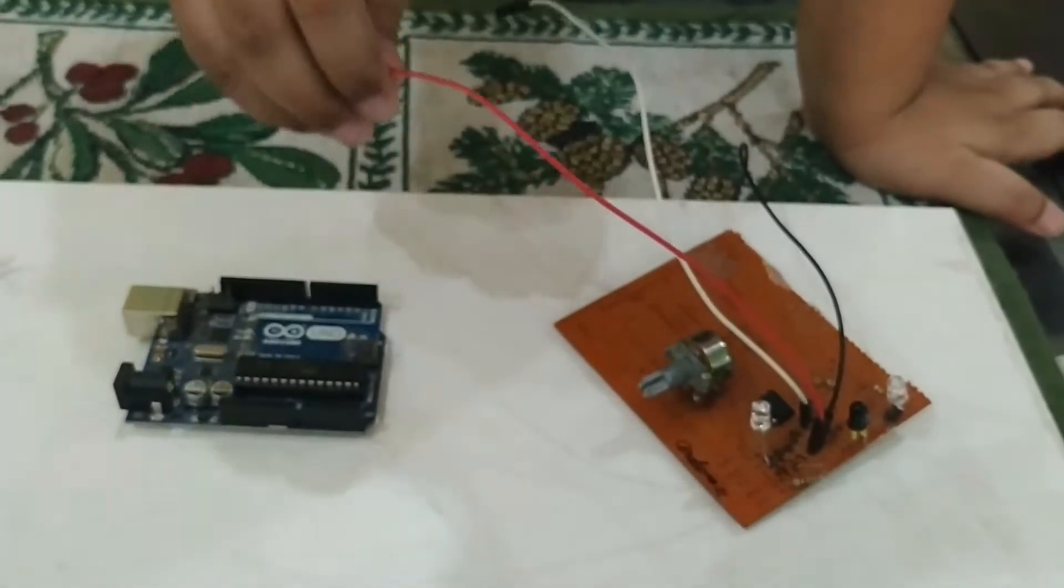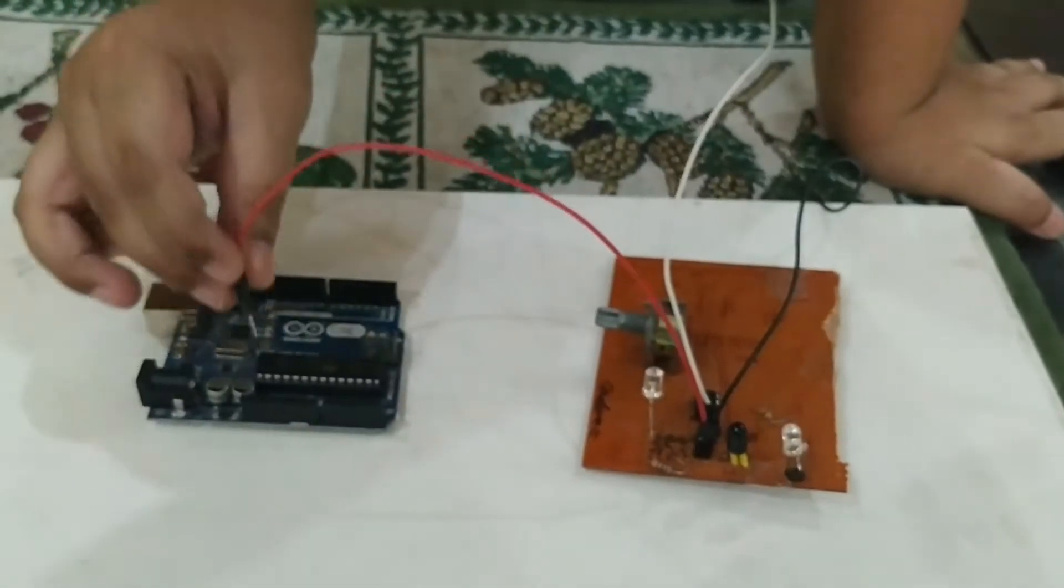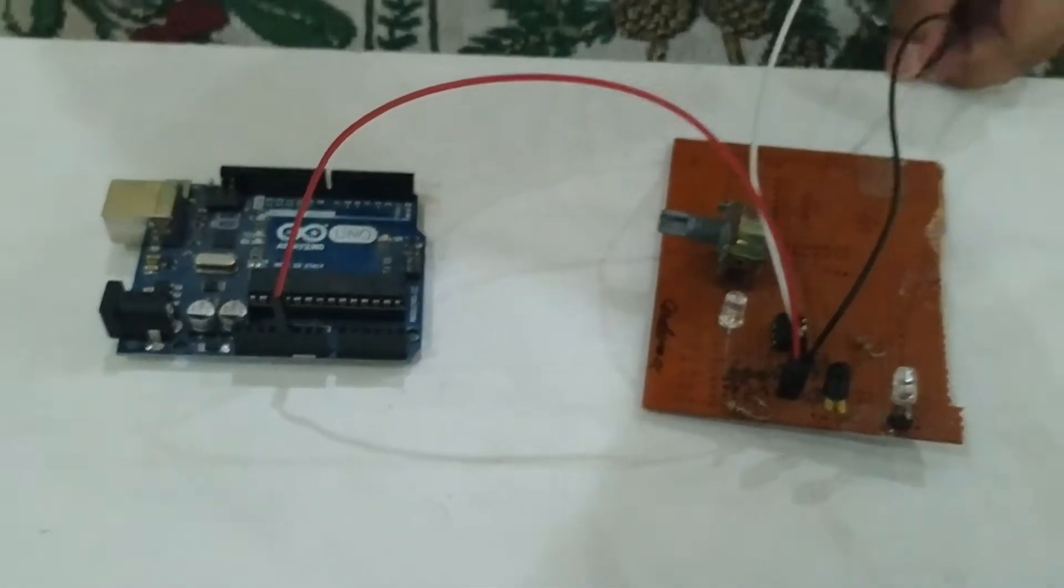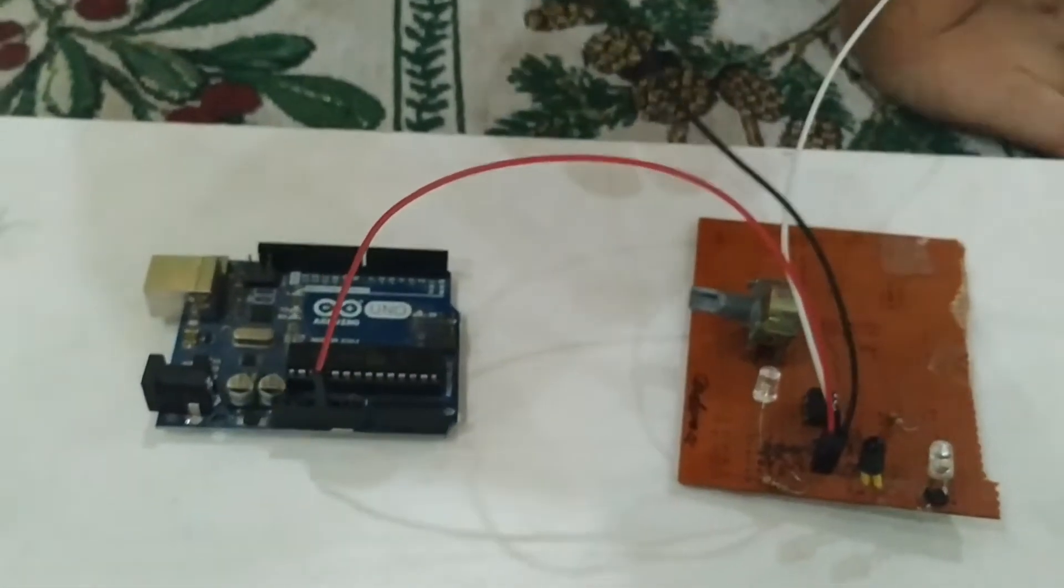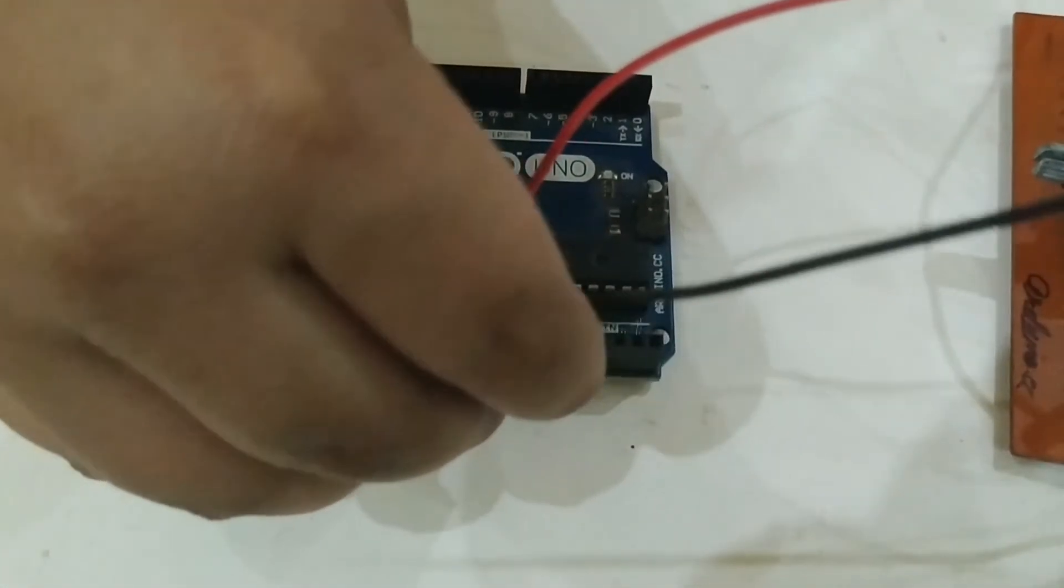Connect the VCC pin of the IR sensor to the 5V pin and the GND pin of the IR sensor to the GND pin of the Arduino.